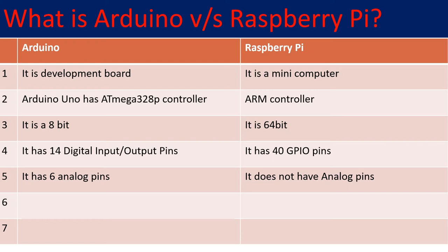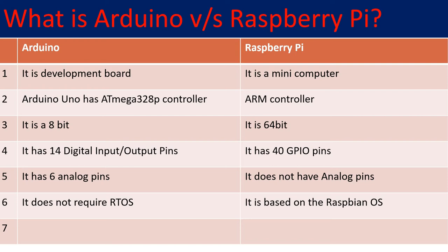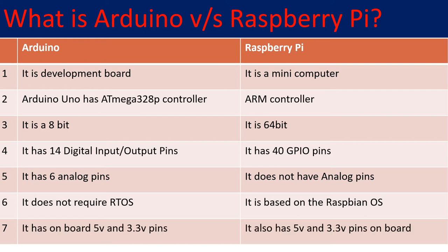Arduino doesn't require an operating system, whereas Raspberry Pi makes use of Raspbian OS — just like your computer which requires an operating system. Raspberry Pi also requires an operating system; basically Raspbian OS is used for the Raspberry Pi board.